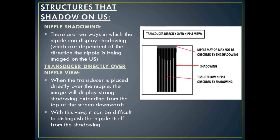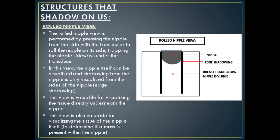Another dense structure that produces shadowing on ultrasound is the nipple. There are two ways the nipple can display posterior shadowing, depending on the direction it is being imaged from. When the transducer is placed directly over the nipple, the image will display strong shadowing extending from the top of the screen downwards, making it difficult to distinguish the nipple itself from the shadowing. Another method is the rolled nipple view, performed by pressing the nipple from the side with the transducer to roll it sideways and trap it under the transducer. In this view, the nipple itself can be visualized, and shadowing is only seen from the sides — known as edge shadowing. This view is valuable for visualizing tissue directly underneath the nipple and for determining if a mass is present within the nipple itself.